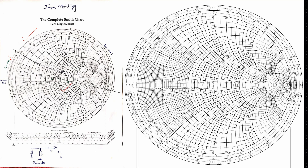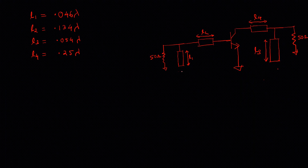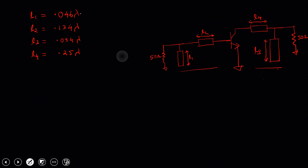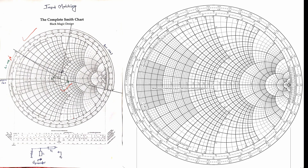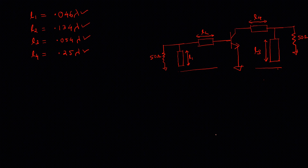In my last video I explained how I designed the input matching and output matching networks. This is our input matching circuit and this is our output matching circuit. These are the lengths I need to use, expressed in terms of lambda, obtained from Smith chart matching. I hope you are already familiar with Serenade — if not, I have a Serenade playlist where you can quickly learn how to use it.